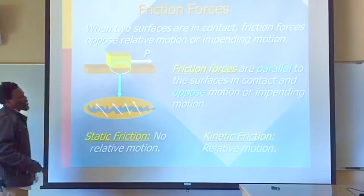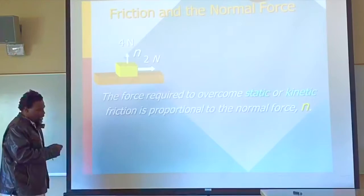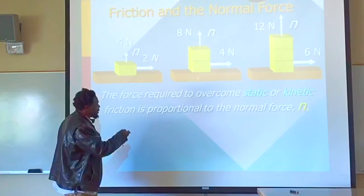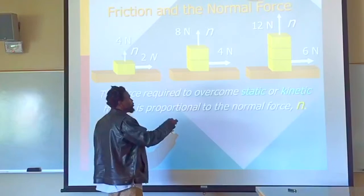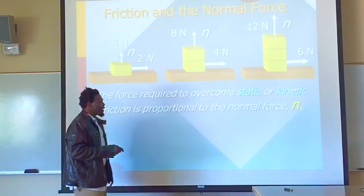Let's consider this block, which is a 4-Newton block, and in this case we are pulling it with 2 Newtons. Let's compare this system with pulling with a 4-Newton force, and notice that the normal force increases because we have increased the weight. So every time we increase the weight, the pulling force must increase to match. As you see, when we have 12 Newtons, we have a 6-Newton pulling force. Therefore, the force required to overcome static or kinetic friction is proportional to the normal force.